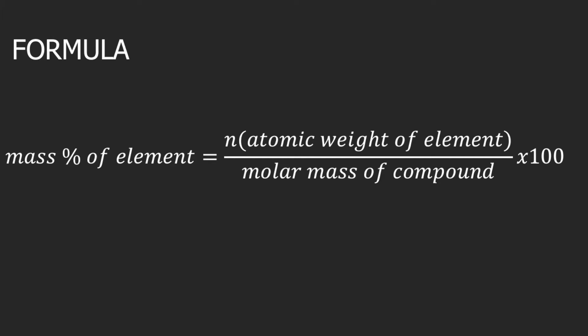Mass percent of an element is equal to n times the atomic weight of the element, divided by the molar mass of the compound, times 100. N stands for the number of atoms of a particular element in a compound. The atomic weight of the element you can find in the periodic table. You should also know how to compute the molar mass of a compound.